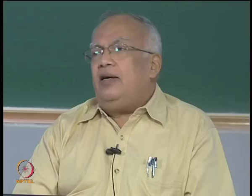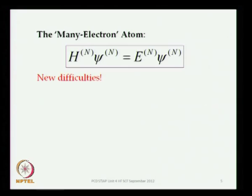Now, this is the relationship we have to address. We will first work with the non-relativistic many-electron problem. The Schrödinger equation will read H psi equal to E psi for the N-particle system, N being the number of electrons in the system. So far so good, but immediately we meet new difficulties.